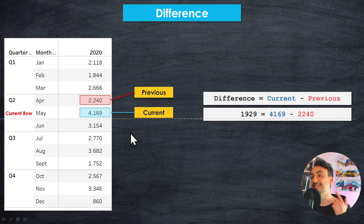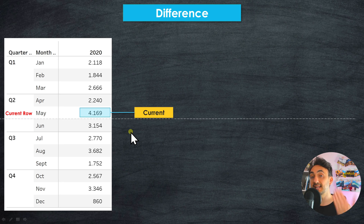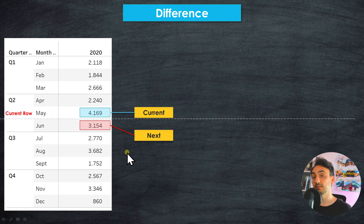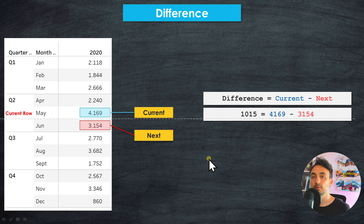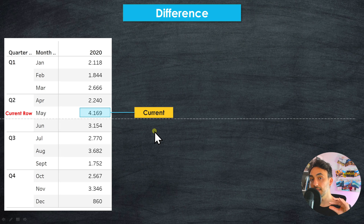The second option is to compare the current value with the next month. In this example we compare May with June, and Tableau will find the difference between the current and the next month by subtracting those values.